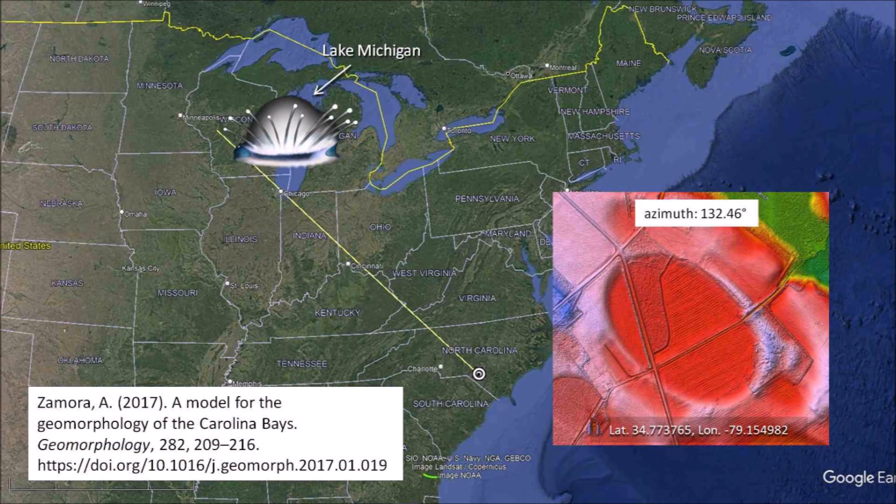The Carolina Bays have a mathematically elliptical geometry, and this implies that they originated as inclined conical cavities or penetration funnels. The Glacier Ice Impact Hypothesis, published in 2017, proposes that an extraterrestrial impact on the Laurentide Ice Sheet ejected pieces of ice in ballistic trajectories, and the oblique impacts of the ice boulders created inclined conical cavities that became shallow elliptical depressions by viscous relaxation.